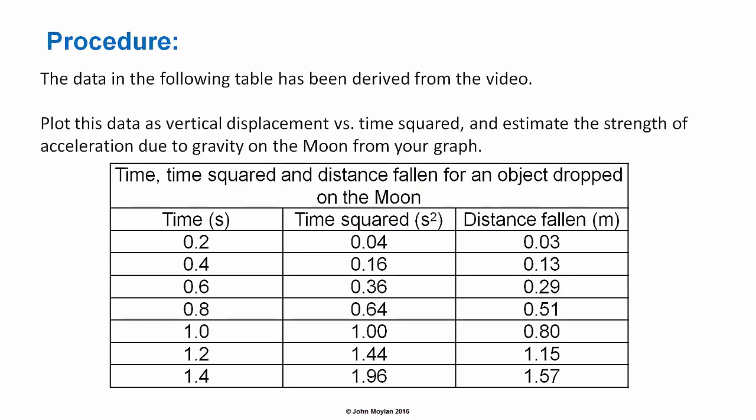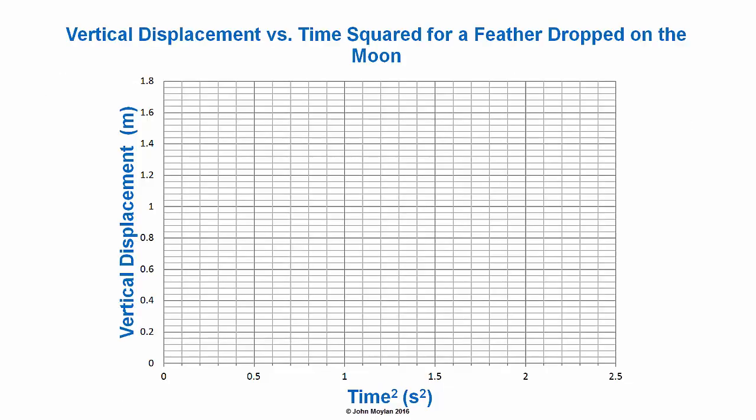The data in the following table has been derived from the video. You're asked to plot this data as vertical displacement versus time squared and estimate the acceleration due to gravity on the Moon from your graph. The suggested graph layout has the title 'Vertical displacement versus time squared for a feather dropped on the Moon,' with vertical displacement in meters on the vertical axis and time squared in seconds squared on the horizontal axis.